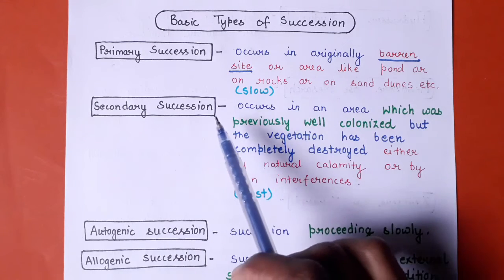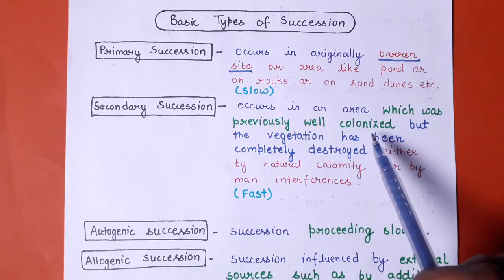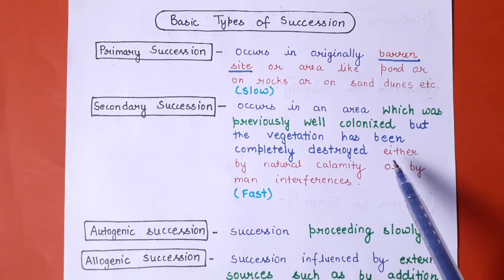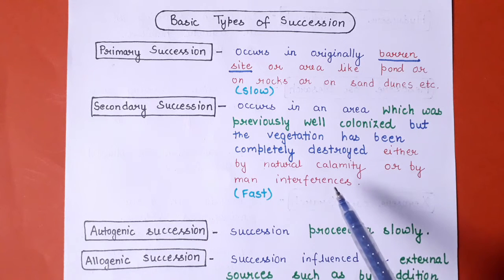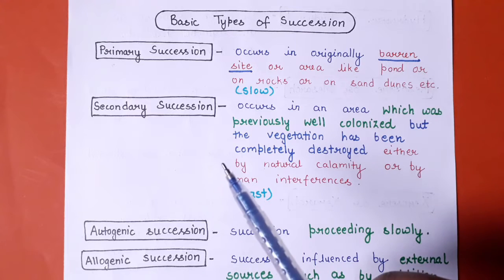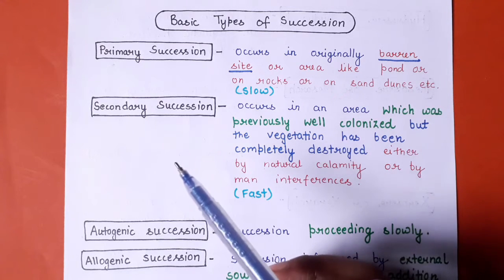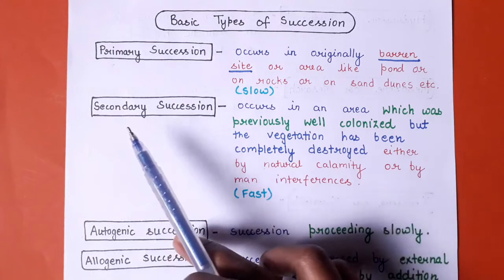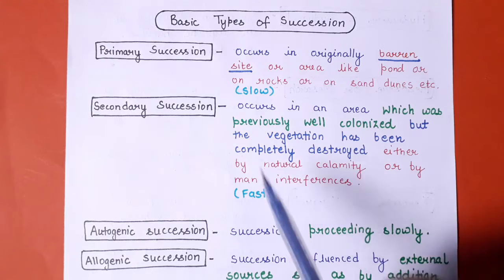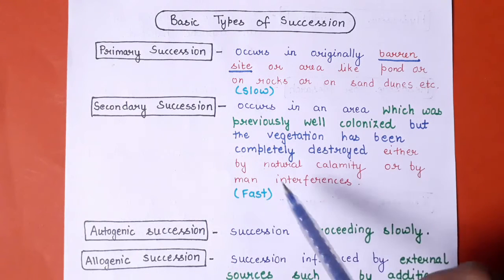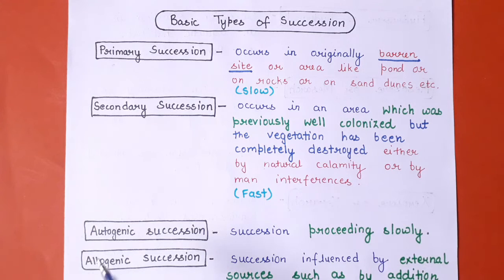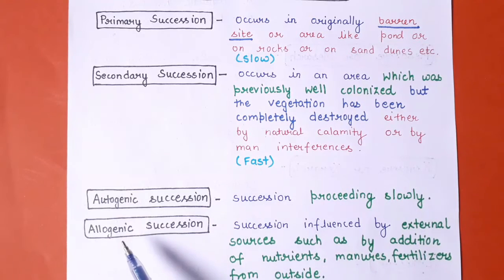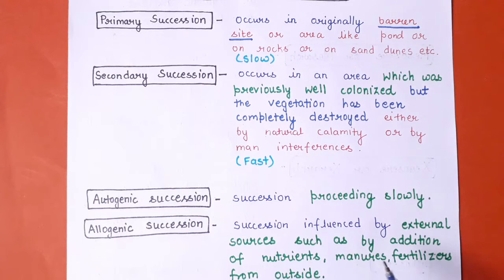Secondary succession occurs in an area which was previously well colonized, but vegetation has been completely destroyed by natural calamity or human interference. Suppose a forest was completely destroyed by a natural calamity, making that area barren — succession on that area is called secondary succession and it is faster than primary succession because resources are already available. Autogenic succession proceeds slowly through internal community changes. Allogenic succession is influenced by external sources like addition of nutrients, manure, or fertilizer from outside.